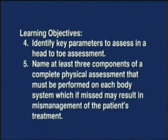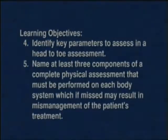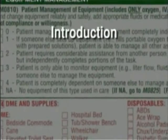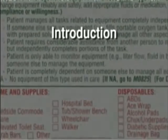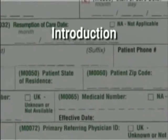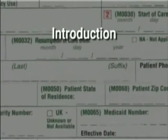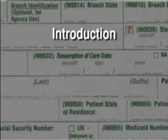Name at least three components of a complete physical assessment that must be performed on each body system, which, if missed, may result in mismanagement of the patient's treatment. In home care, a comprehensive assessment combines both Medicare-mandated OASIS items as well as additional assessment details that relate to the home environment and the patient's informal support systems, taking into account the adequacy of available agency staff and services to safely meet the patient's home care needs.